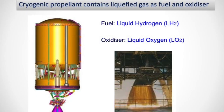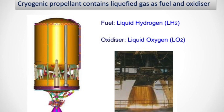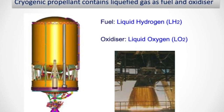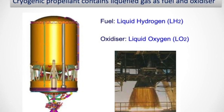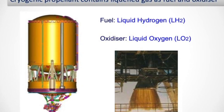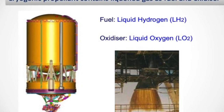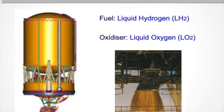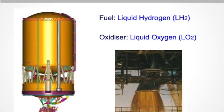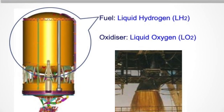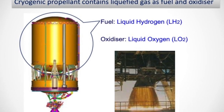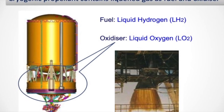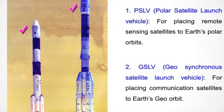Coming to cryogenic propellant — here, liquefied gases are used as fuel and oxidizer. This is also like a liquid propellant: fuel and oxidizer are stored in different tanks. But the difference is that an igniter is required to trigger the burning of the propellant. For making cryogenic propellant, hydrogen and oxygen gases are cooled into liquid phase. Liquefied hydrogen is stored in the fuel tank and liquefied oxygen is stored in the oxidizer tank.